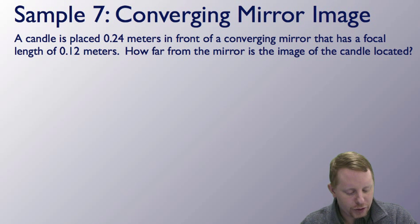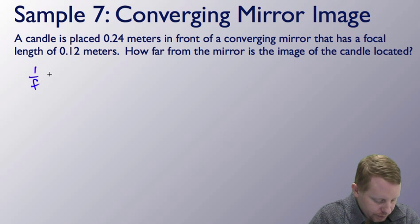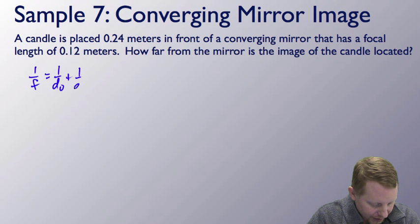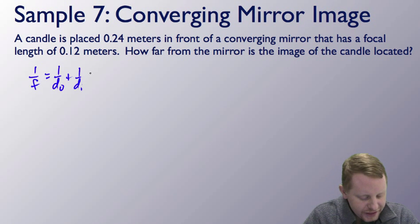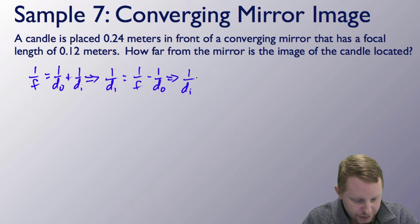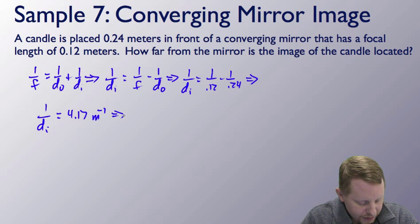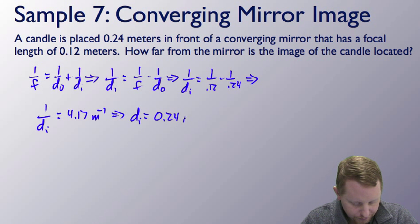A candle is placed 0.24 meters in front of a converging mirror that has a focal length of 0.12 meters. How far from the mirror is the image of the candle located? Starting with the mirror equation — 1/f = 1/do + 1/di — we rearrange to get 1/di = 1/f − 1/do. So 1/di = 1/0.12 − 1/0.24, which gives approximately 4.17 inverse meters. Therefore di = 1/4.17 ≈ 0.24 meters.